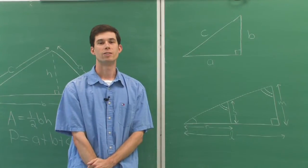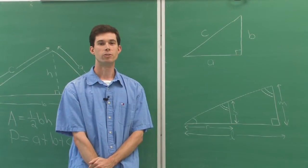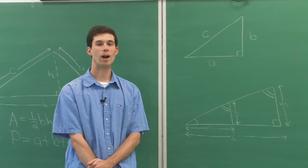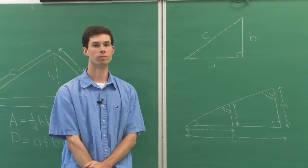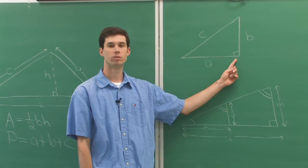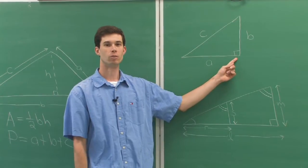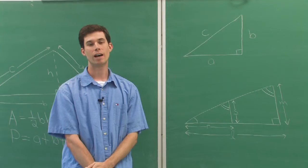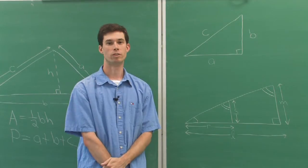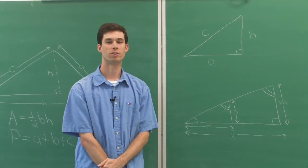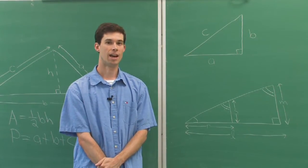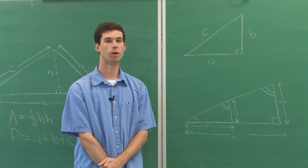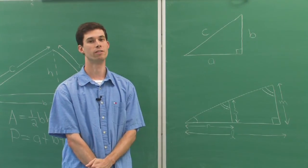A special type of triangle that you may run into often is the right triangle. This is a triangle which has a right angle as one of its angles, often times denoted by the little box in the angle. Now for right triangles, not only do we have the previous formulas — the area is one half the base times the height and the perimeter is the sum of the sides — but we also have the celebrated Pythagorean theorem.